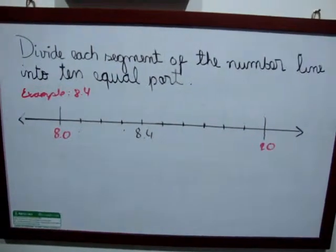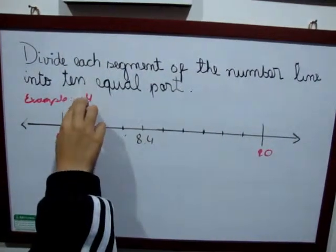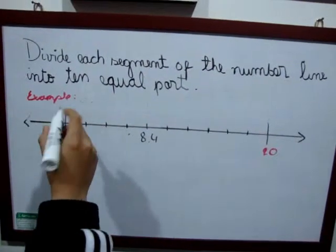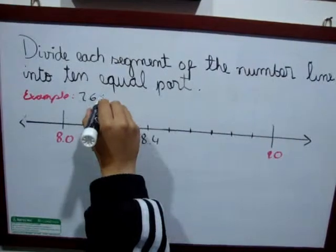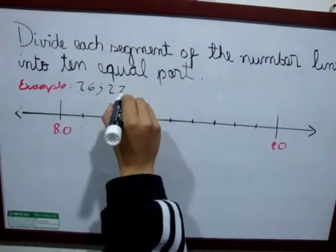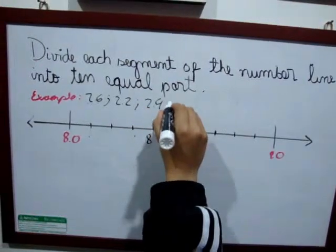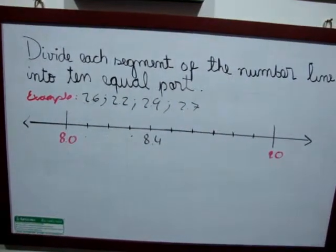So we can do another example with many decimals. For example, 2.6, 2.2, 2.9, and 2.7. So we can locate it.